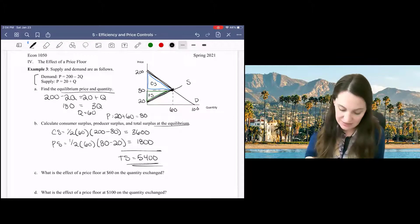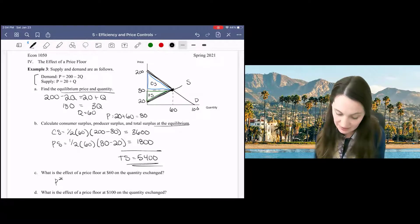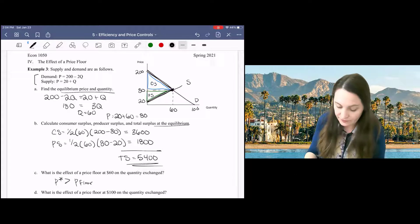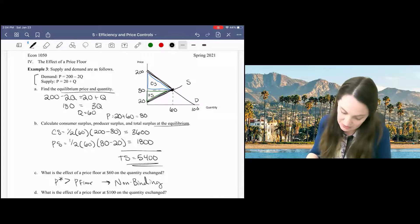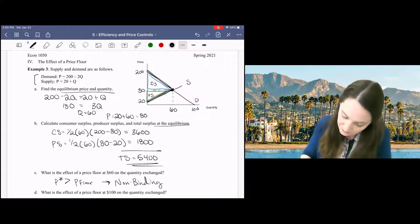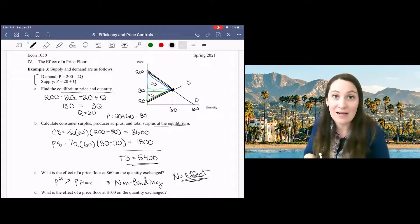Since the equilibrium price is already higher than the price floor, then the price floor will be non-binding and there will be no effect on the market. The market will remain at equilibrium.